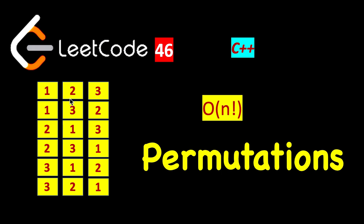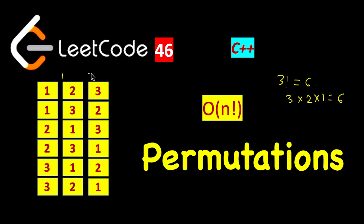For example, the input is [1, 2, 3] and we know that six permutations can exist since three factorial is six — three times two times one equals six. You have to write down all the possible combinations, all the possible places a given digit can take. So one can occur in the first place.